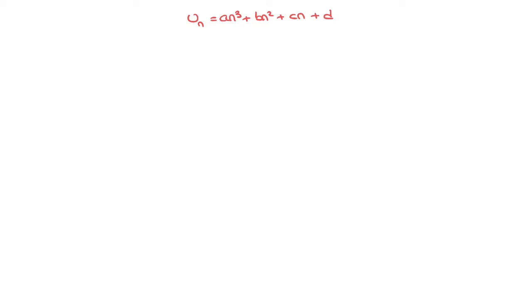Let's say we're given the first few terms: 4, 14, 40, 88, 164, and so on. We need to find this sequence's formula.